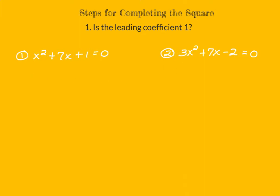In the first equation, the leading coefficient is 1 — it's understood to be 1 if it's not written. In the second problem, the leading coefficient is 3. So we have two different answers: yes, the leading coefficient is 1 for the first, and no, it's not 1 for the second. So we have to do a different step for the second problem. What we have to do is use algebra to make that leading coefficient equal to 1.